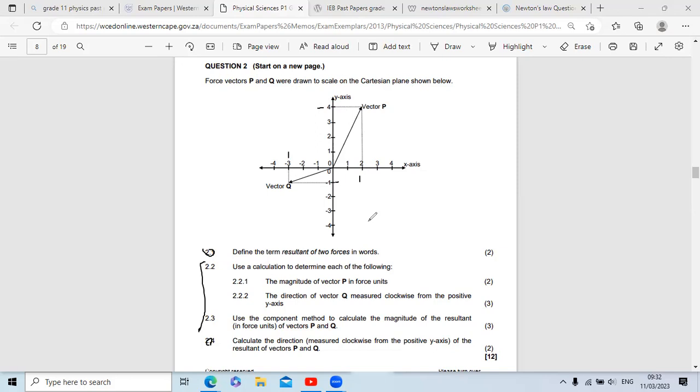So to be honest this is a much easier question than the ones that we're used to. But let's just continue. They say use a calculation to determine the following: the magnitude of vector P in first unit. So basically you remember if you look at the structure you can see that this is a 90 degree angle and this is also a 90 degree angle. So you can use Pythagorean theorem to find this because this is going to be a hypotenuse or R.